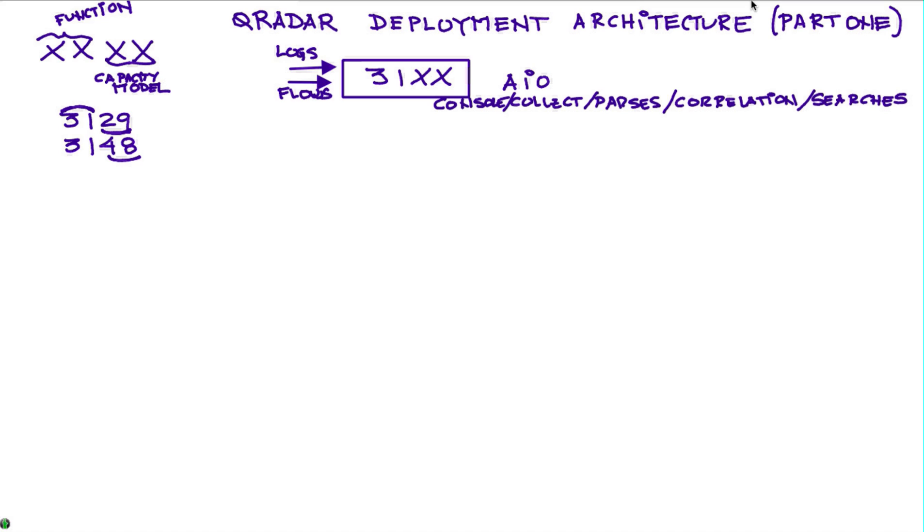This is just part one of the video. In subsequent videos I'm going to talk about geographic distribution, cloud, hybrid mode, etc. But what happens if you have more capacity? The capacity in QRadar is measured in events per second and flows per minute. Let's say that you exceed the capacity of a particular box of that console.